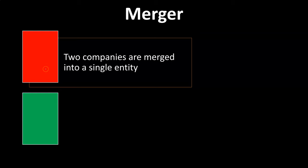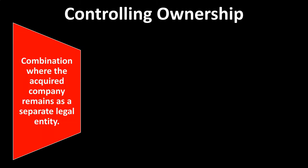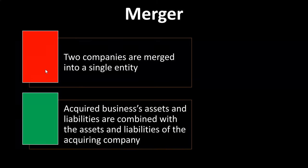A merger is when two companies are merged into a single entity. When thinking about types of business combinations, we're typically thinking about a merger or a controlling ownership type of situation. A merger means two separate entities have merged together — one entity consumed the other. The larger entity typically consumes the smaller entity, which has been dissolved into the one remaining entity.